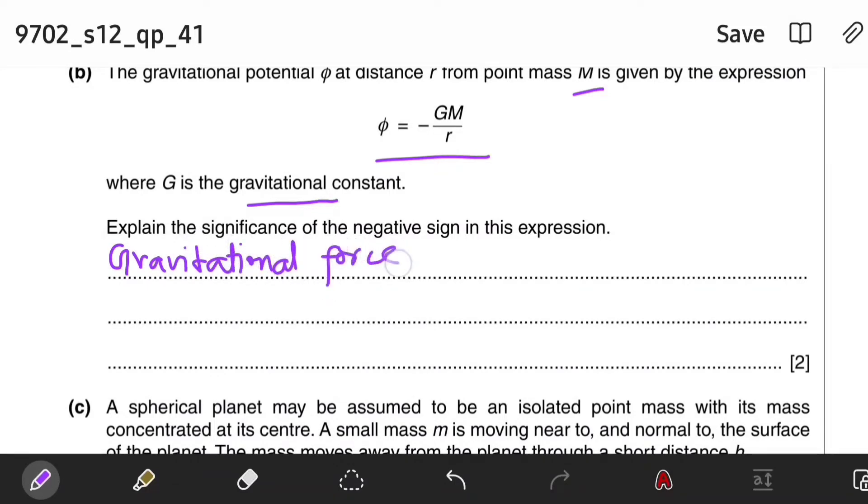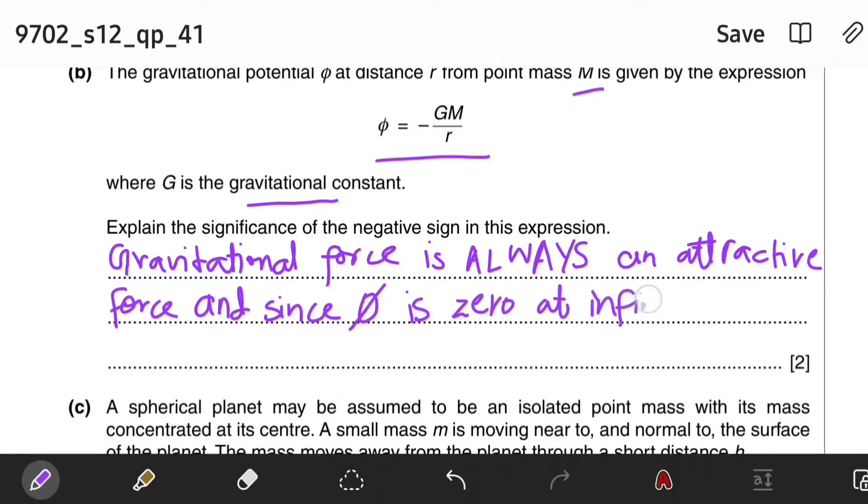Gravitational force is always an attractive force. And since gravitational potential is zero at infinity, when r (the distance from the point mass) decreases, the value of gravitational potential is going to become negative.